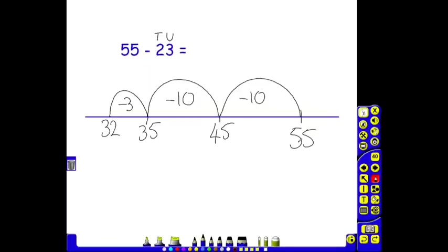So, 55 take away 23 is 32. And we did this using a number line, but by partitioning that second number to make it easy for us.